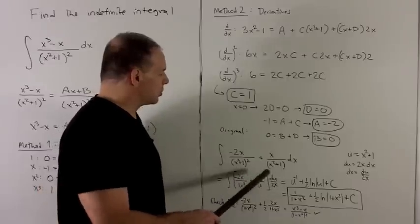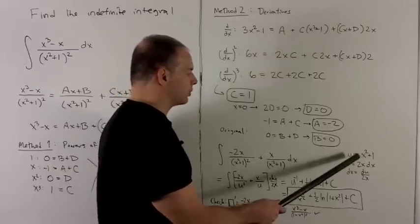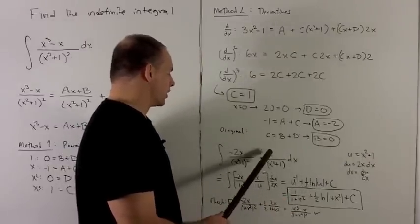So note the substitution that I'm going to use is going to take care of both of these at once. I'm going to substitute out u equal to x squared plus 1, because the derivative of x squared plus 1 is on the top. That's going to be the x up to a factor.